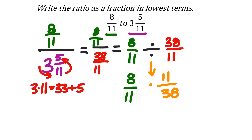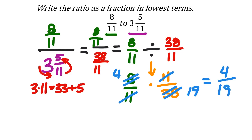There are several ways to simplify from here. I'll use cross simplification. The 11 in numerator and denominator cancels. Then 8 and 38 are both divisible by 2 — 8 divided by 2 is 4, and 38 divided by 2 is 19. Looking at 4 and 19, they have no common factors, so my final answer is 4 over 19.